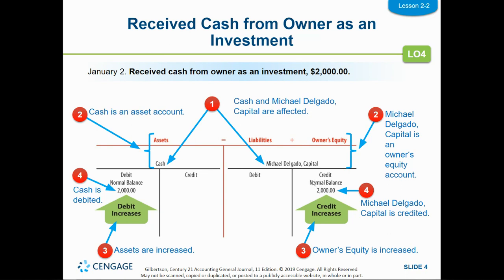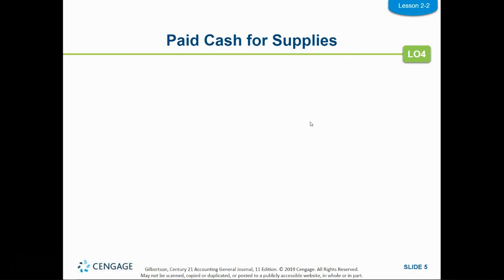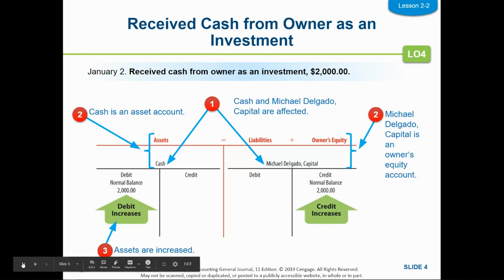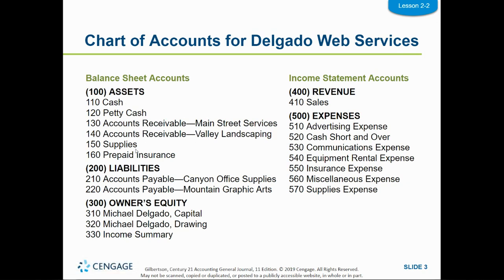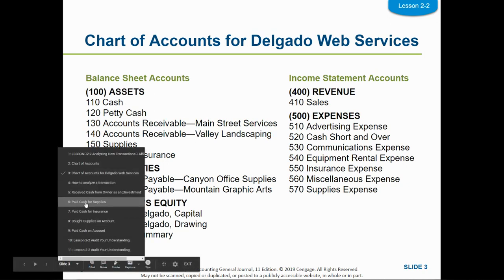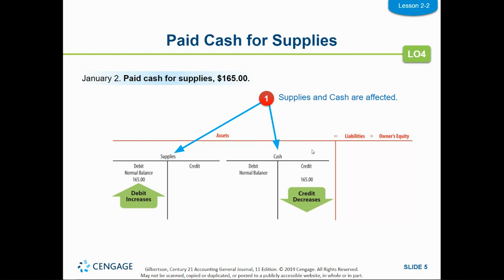We have a debit and a credit, both go up, and our accounting equation is still in balance. Those are the four questions you're going to ask yourself through every transaction. I'm going to do one more with you. The next transaction is: paid cash for supplies. Looking back at our chart of accounts, we have an account called cash and an account called supplies — both are assets.